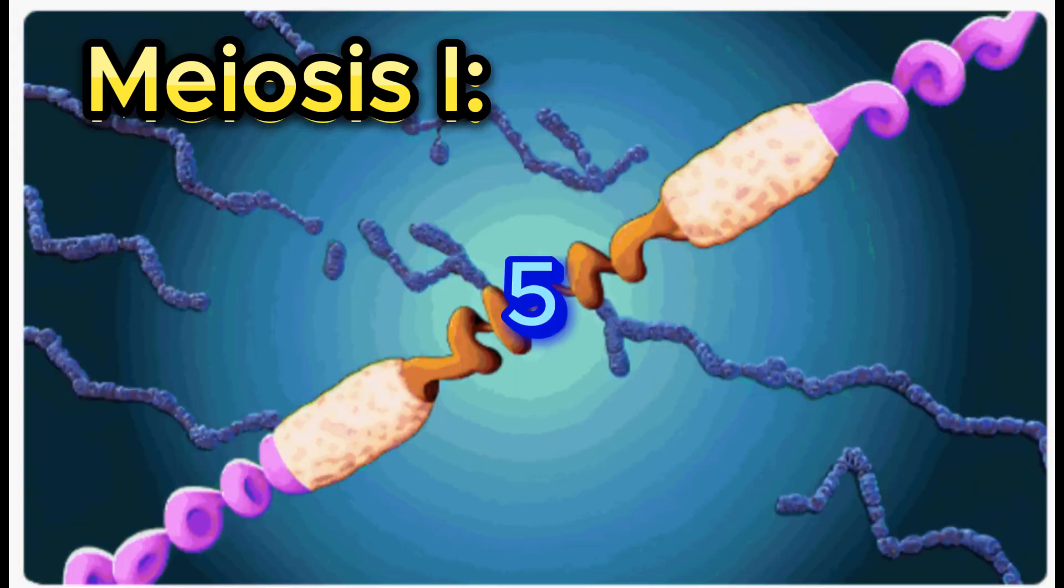Number 5: Telophase I. Chromosomes reach the opposite poles of the cell. Decondensation occurs, and a nuclear membrane forms around the nuclei. Cytokinesis may occur, dividing the cytoplasm and forming two secondary cells.